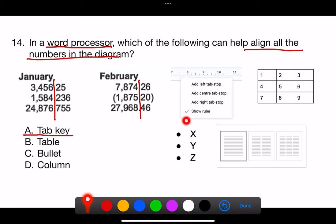Let's go through why other options are not correct one by one. B. Tables organize data but don't align numbers at decimal points without extra formatting.